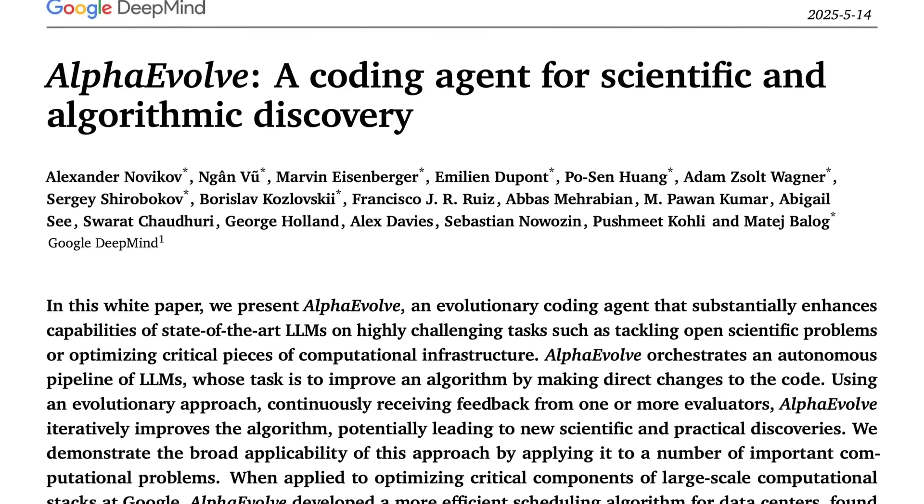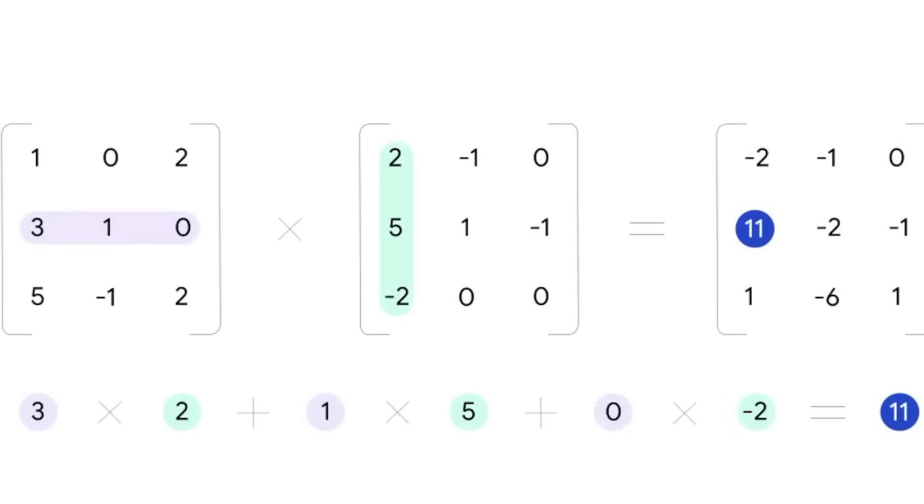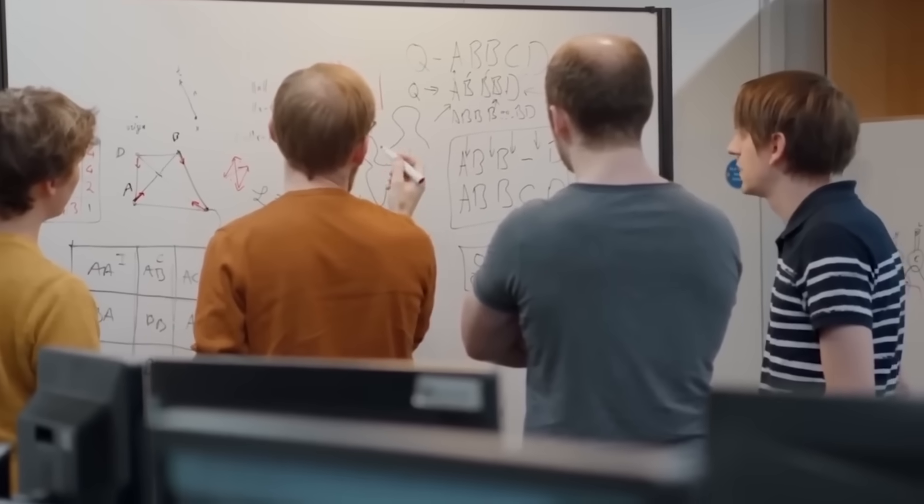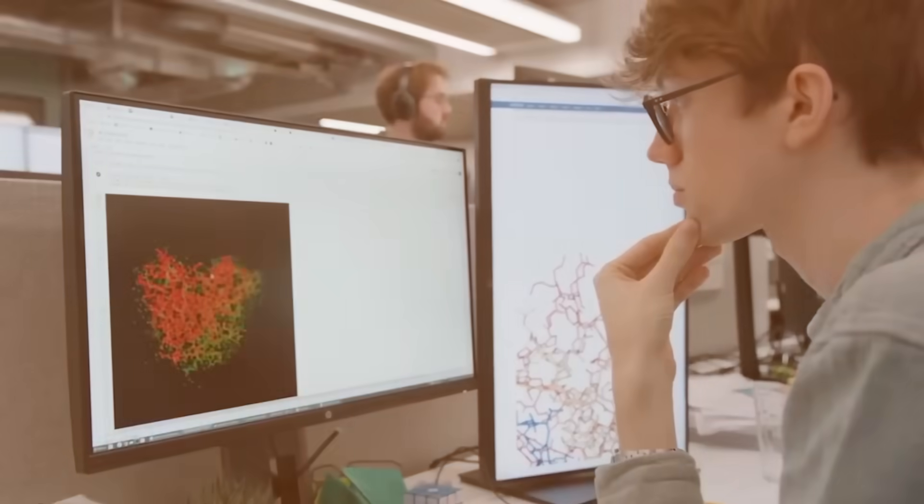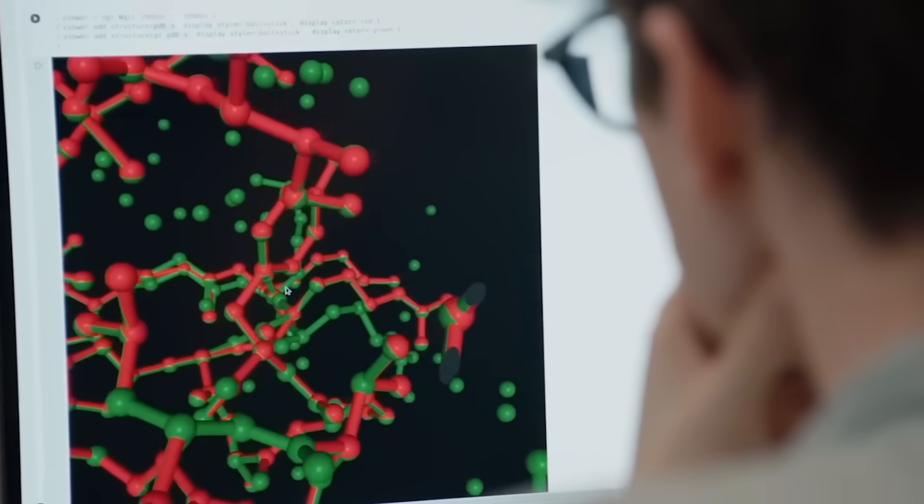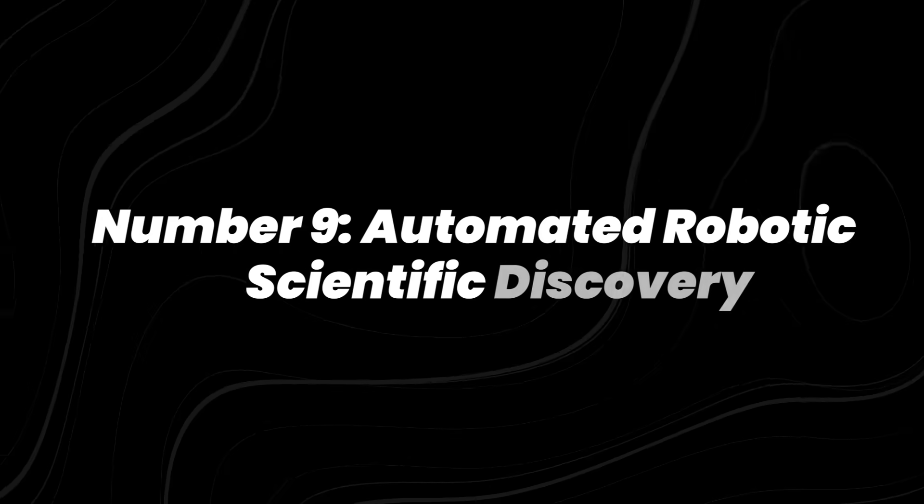In 2025, AlphaEvolve took it further by designing state-of-the-art algorithms across 50 open math and optimization problems, beating human-devised methods in many cases. These breakthroughs save computing power and time on a global scale. For the first time, AI is directly contributing to the foundation of computer science itself.